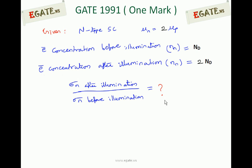We know conductivity in a semiconductor is due to both majority and minority carriers. But most of the time we can approximate the conductivity as being due to majority carriers only, because majority carriers are very large in number compared to minority carriers. So we can neglect the minority carriers and write the conductivity equation as: sigma_n ≈ Nn × Q × mu_n. This is approximately equal to the final conductivity.